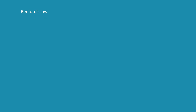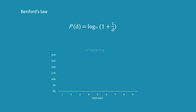Benford's law specifies a different distribution for the first digit of a number. As you can see in this formula, more specifically, according to Benford's law, the probability that the first digit equals 1 is about 30%, while it's only 4% for digit 9.